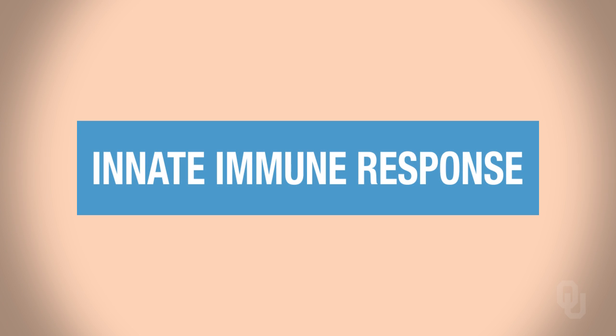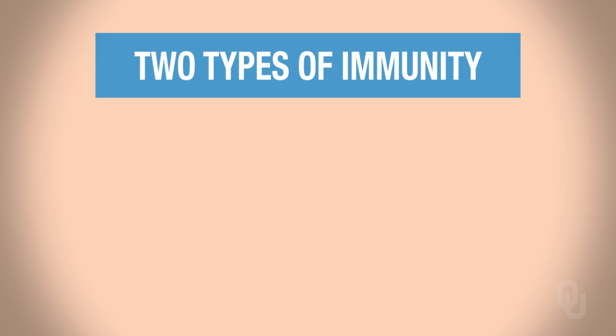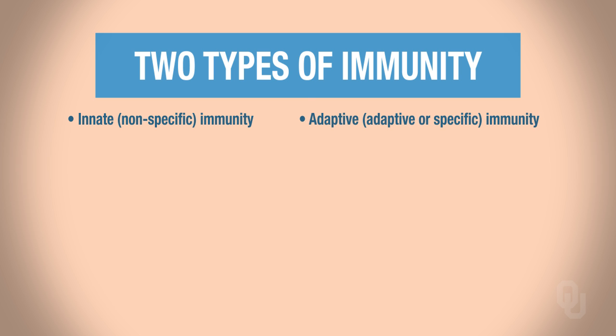We are going to continue our discussion of the immune system, discussing innate immunity. Before we discuss innate immunity, you need to understand that there are actually two different types of immunity: innate immunity, which is also called nonspecific immunity, and acquired or adaptive immunity, which is also known as specific immunity.